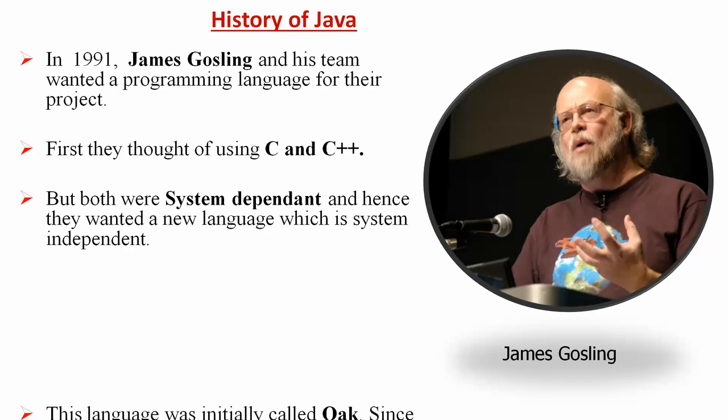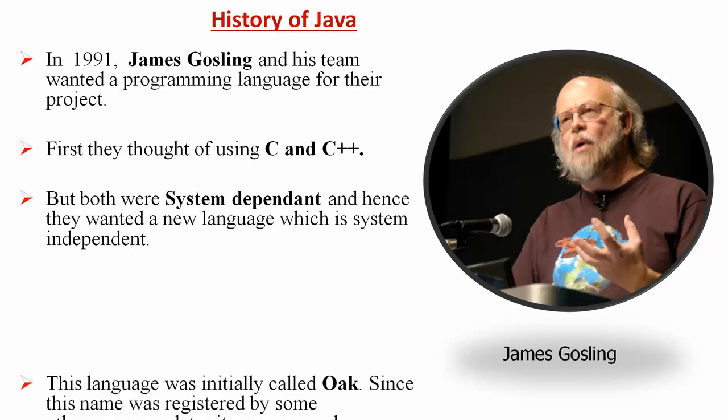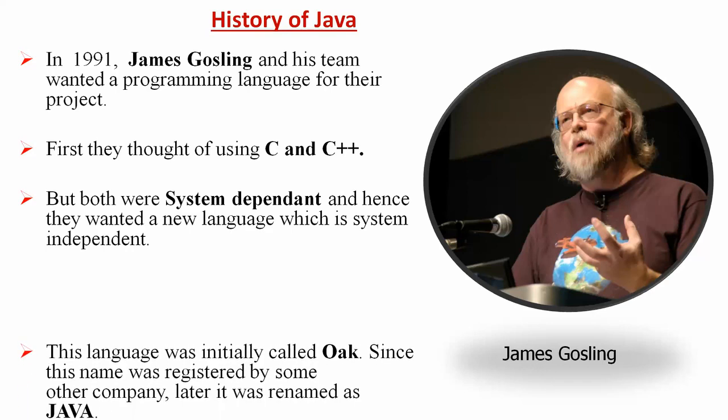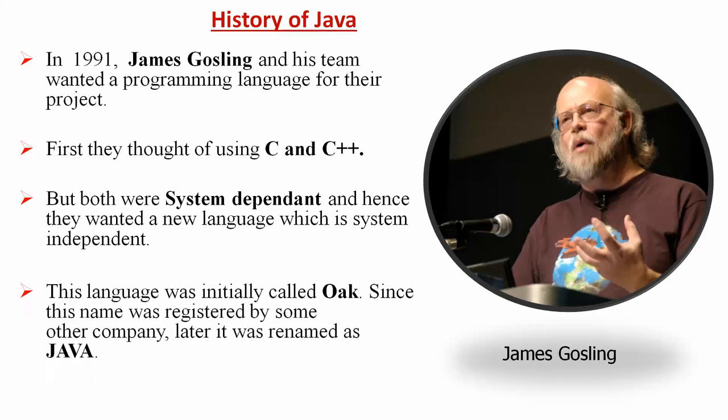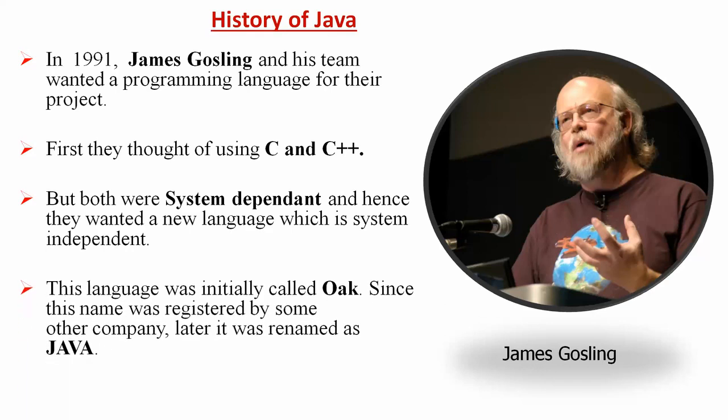Hence they wanted a new language which can run in any operating system, which is regarded as system independent. It means WORA — Write Once, Run Anywhere. So they developed a new language. It is system independent and it was initially called Oak. Since this name was registered by some other company, later it was renamed as Java.